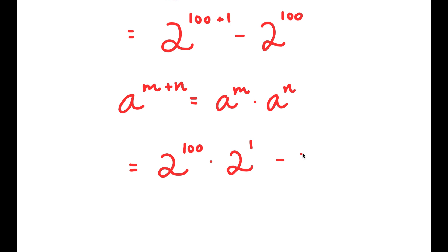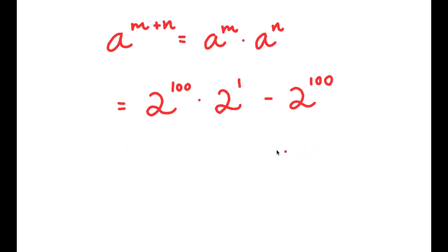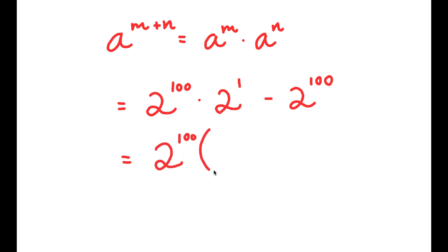And now I have this minus 2 to the power of 100. From here, I can factor out 2 to the power of 100, so I get 2 to the power of 100 times 2 to the power of 1 minus 1.